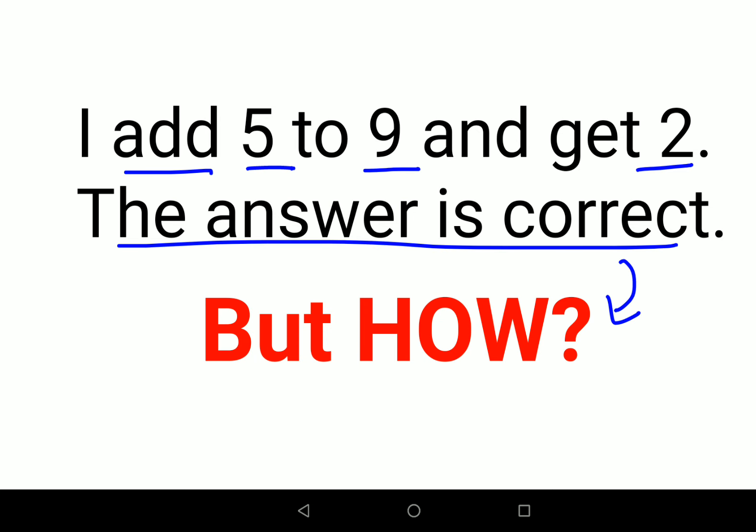Now when you have some kind of riddle, how do we do? The first step is very important. The first thing which you need to realize is let's try and add them directly. So we add 5 plus 9, you get this as 14 and not 2.